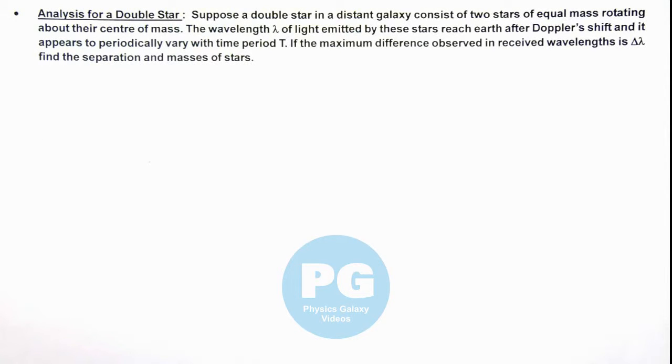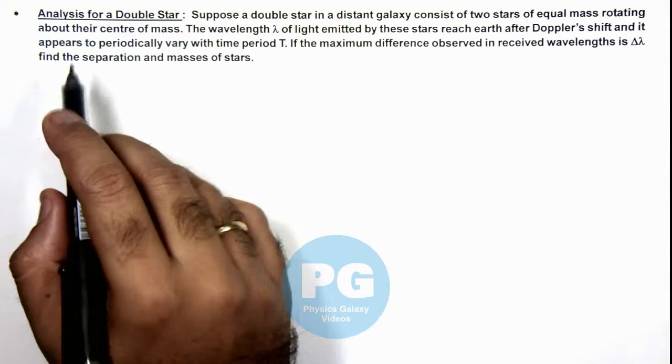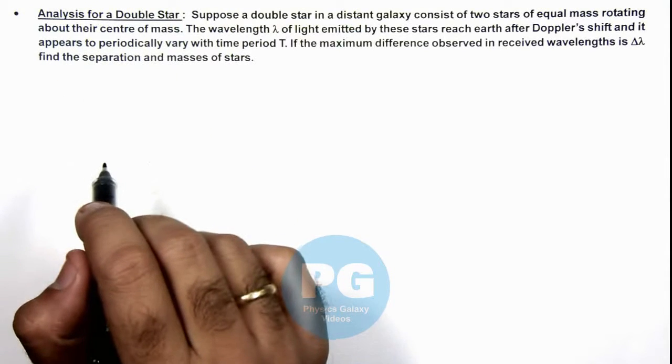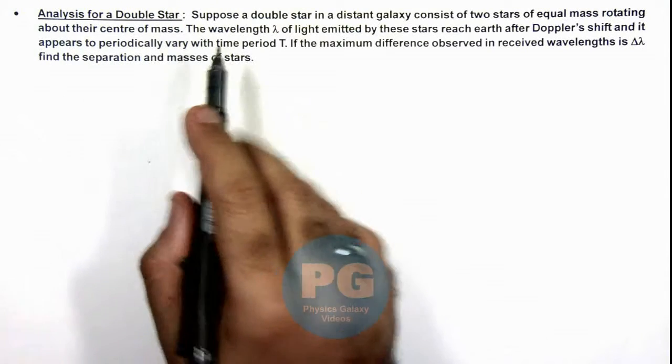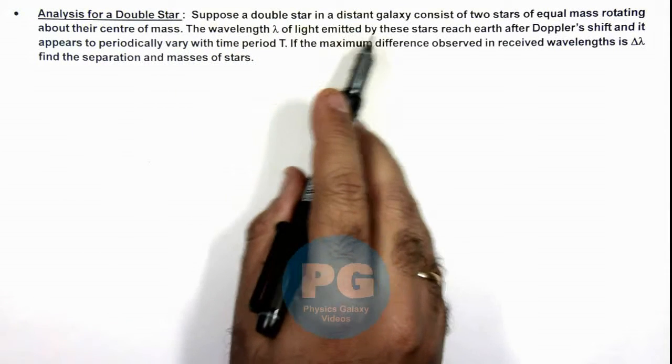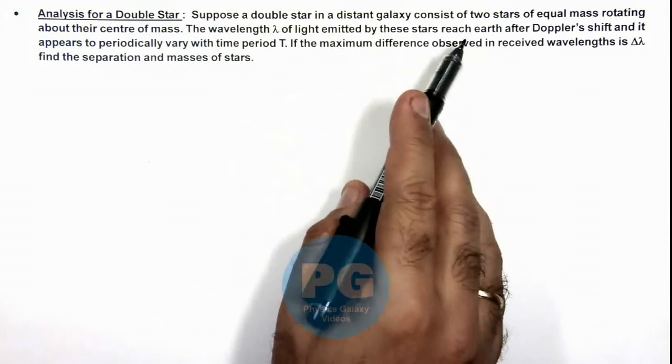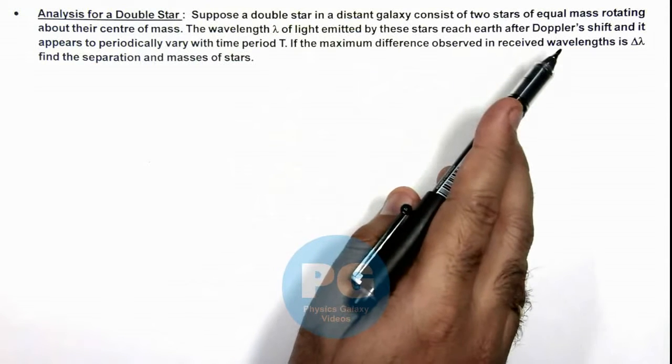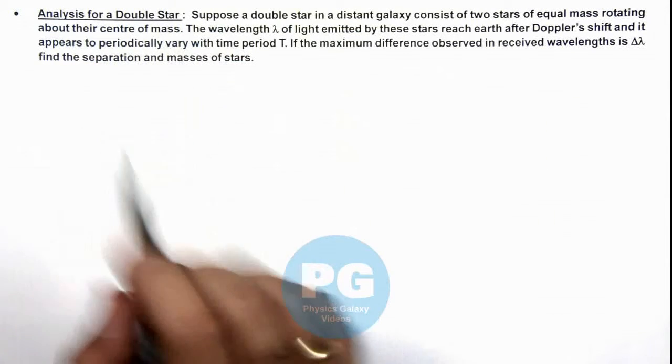In this illustration, we'll discuss the analysis of a double star. We are given to suppose a double star in a distant galaxy consists of 2 stars of equal mass rotating about their common center of mass.